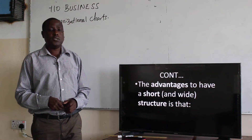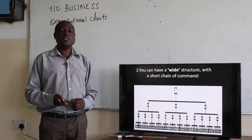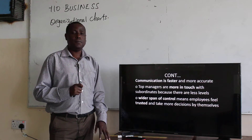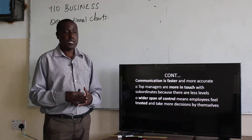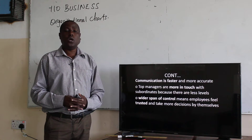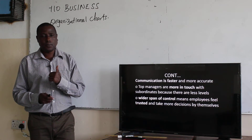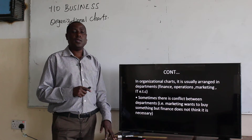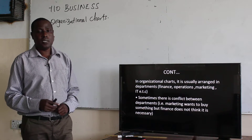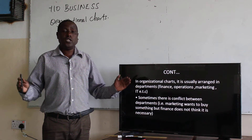What are the advantages of having a short and wide structure? One, communication is faster and more accurate. The top managers are more in touch with the subordinates because there are fewer levels. Another advantage is that there is a wider span of control, which means employees feel more trusted and take more decisions by themselves. In organizational charts, things are usually arranged in departments — finance, operations, marketing, information technology, and so on.